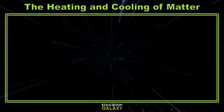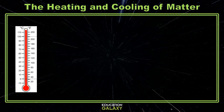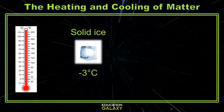We can tell whether water is being heated or cooled by measuring its temperature. Today we'll do this in degrees Celsius. Let's look at an example where we'll warm up some water from a solid state to a liquid state. Let's say we start with some ice, or solid water, that is at negative three degrees Celsius. That means it's colder than zero degrees.